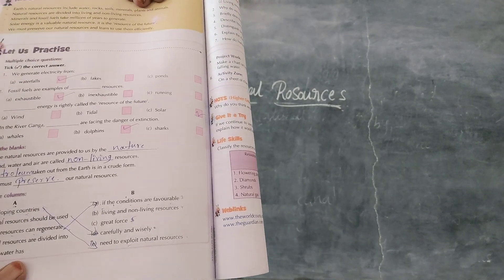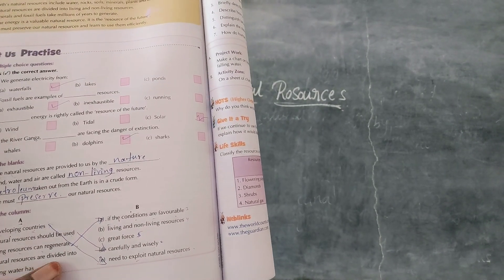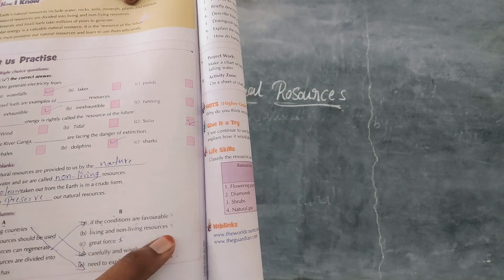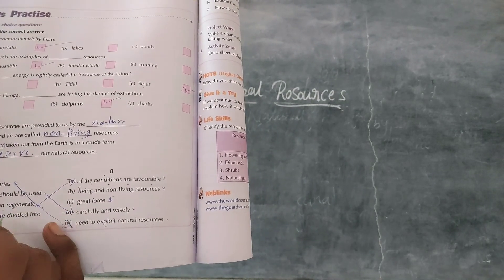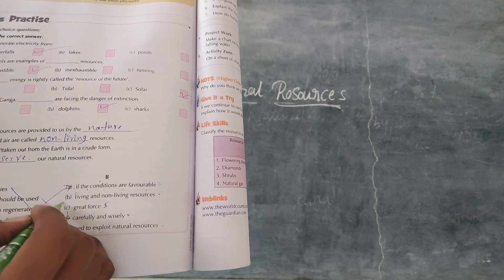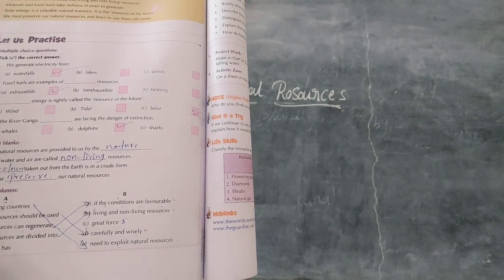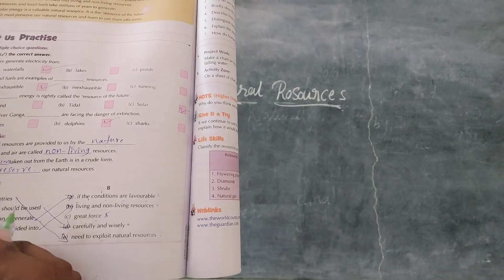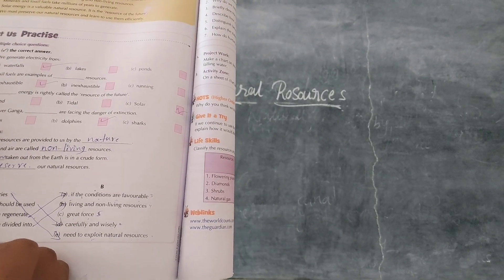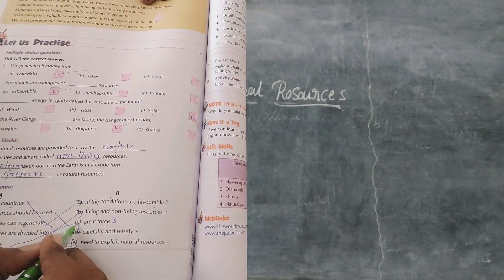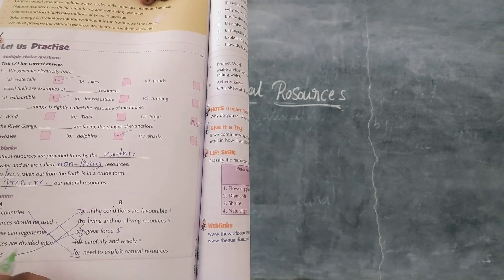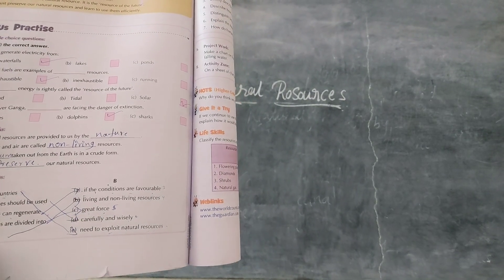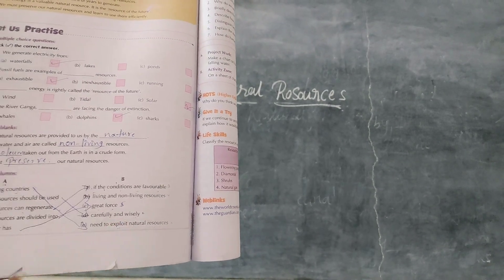Come to the fourth one. Natural resources are divided into living and non-living resources. Match fourth one to the second column. Come to the fifth one. Falling water has a great force. Match fifth one to the fourth one.